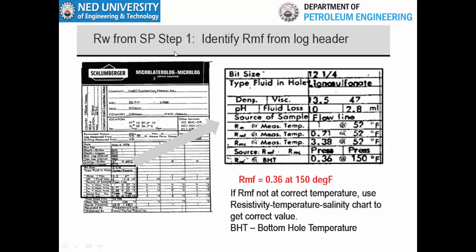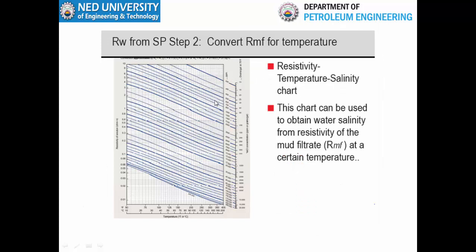For example, RMF is given as 0.36 at 150 degrees Fahrenheit, which is the reservoir temperature. RMF is generally reported on the log header — it may be reported at borehole temperature or surface temperature. For our purposes, RMF should be at reservoir temperature, which is the bottom hole temperature.